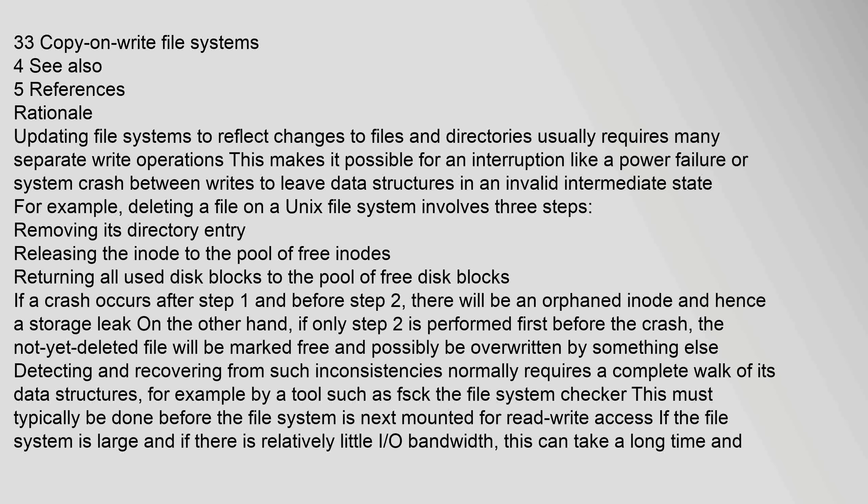Updating file systems to reflect changes to files and directories usually requires many separate write operations. This makes it possible for an interruption like a power failure or system crash between writes to leave data structures in an invalid intermediate state. For example, deleting a file on a Unix file system involves three steps: removing its directory entry, releasing the inode to the pool of free inodes, and returning all used disk blocks to the pool of free disk blocks. If a crash occurs after step 1 and before step 2, there will be an orphaned inode and hence a storage leak.